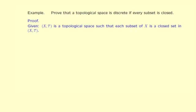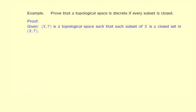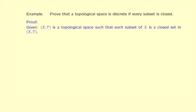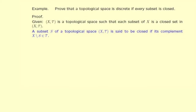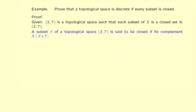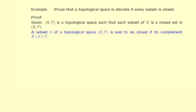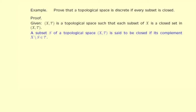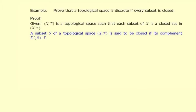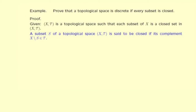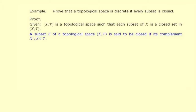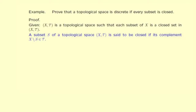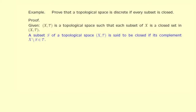Step 2: Write down the definition of each technical term in what we are given. The technical term is 'closed set.' A subset S of a topological space is said to be closed if its complement — that is, X minus S — is in τ, that is, is an open set.